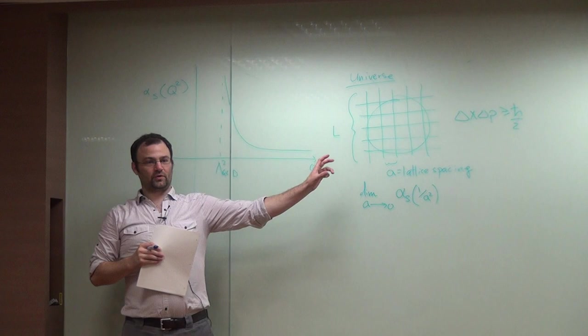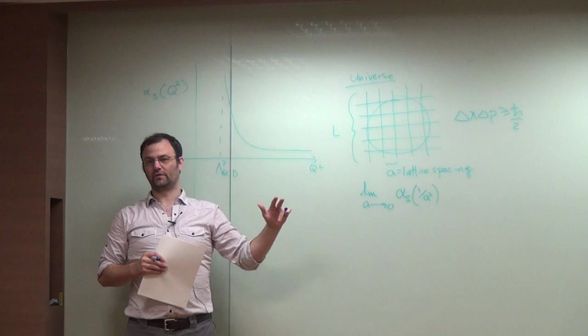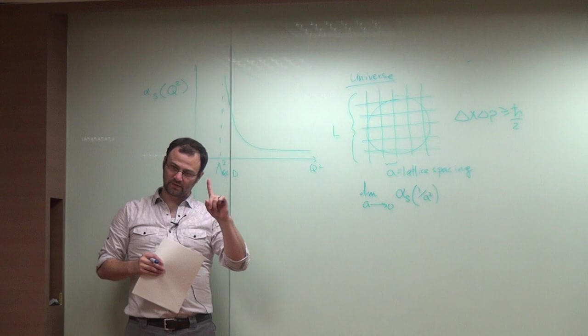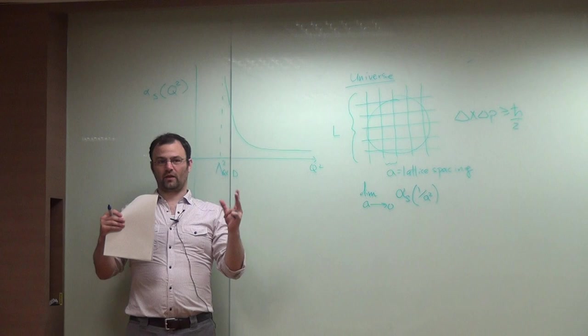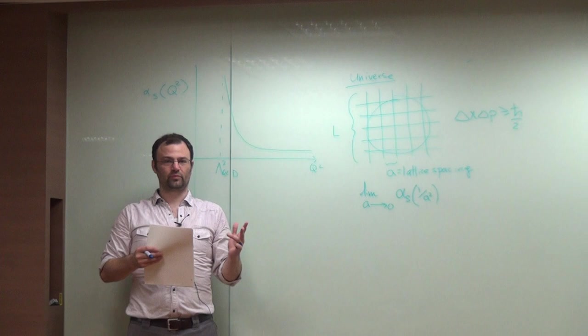Whereas in QED, you had this Landau pole. We didn't know how to go to arbitrarily large Q squared because the theory just does not make sense in the ultraviolet. Whereas in QCD, the exact opposite happens. And so then you can let the computer handle all the infrared non-perturbative physics and you can just put the exact theory you want on the computer. So this is again the reason why QCD is defined as lattice QCD as A goes to zero, and there's no approximation you have to make to do that.